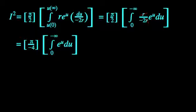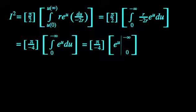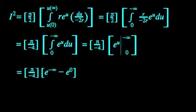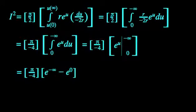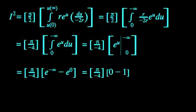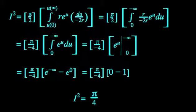So from here, we need only to evaluate the integral of e to the u, a little bit of common sense in arithmetic, and there we are. We have I squared equal to pi over 4.